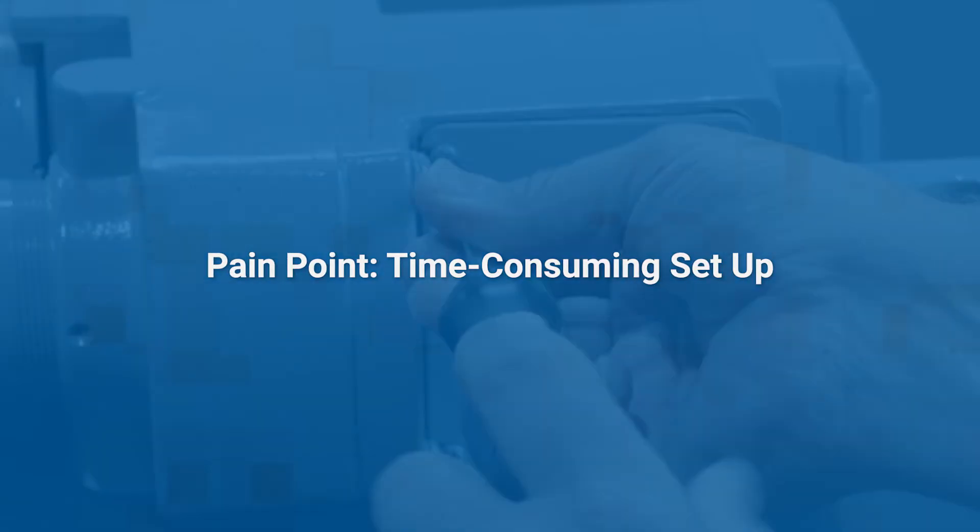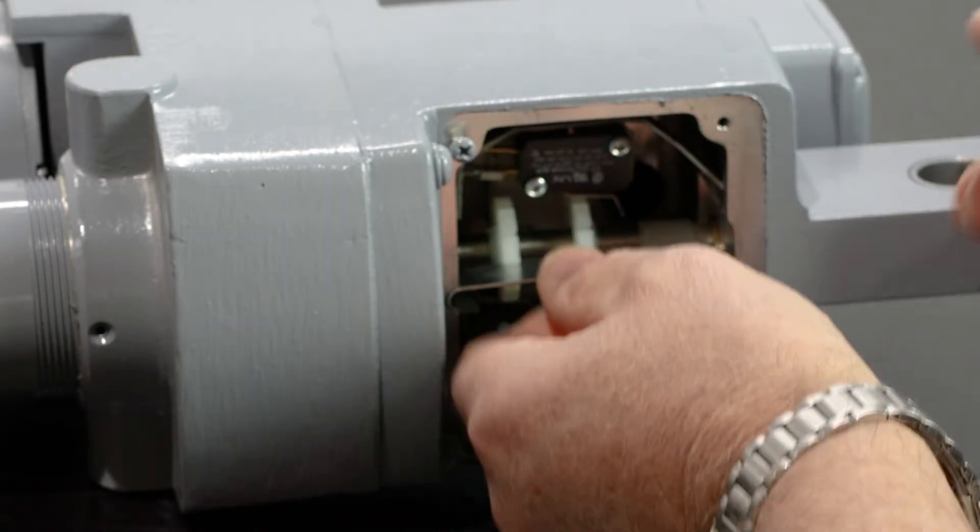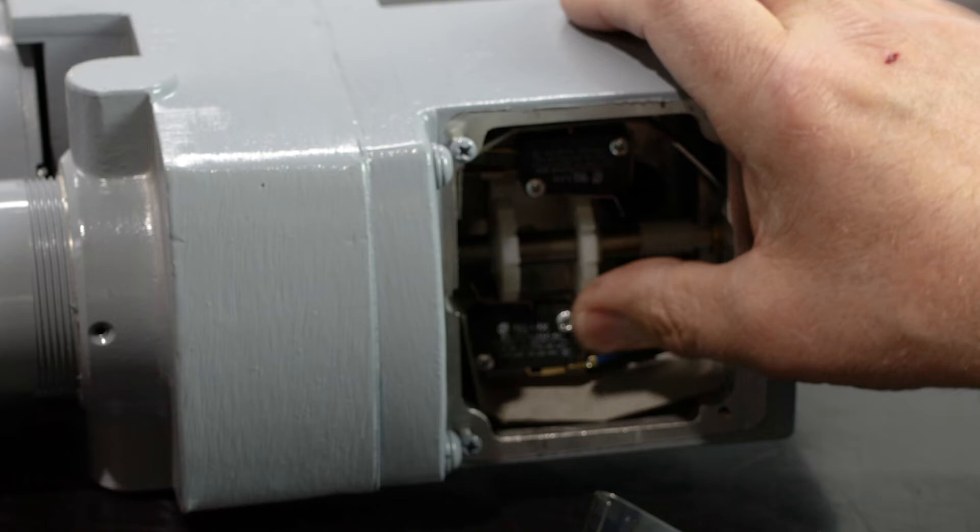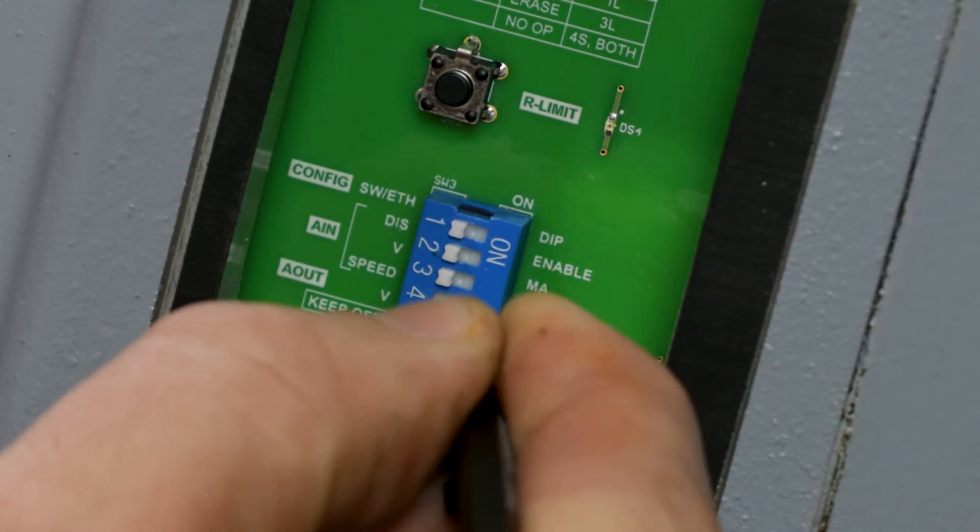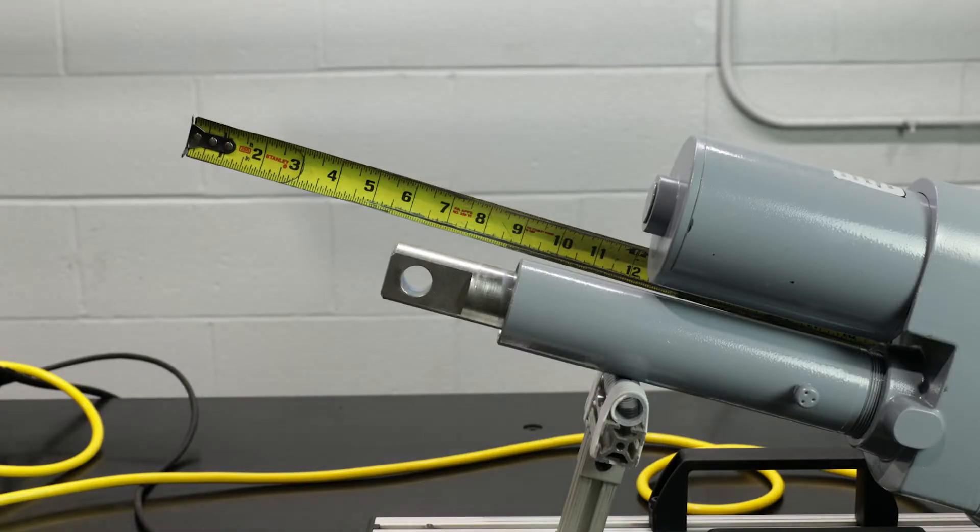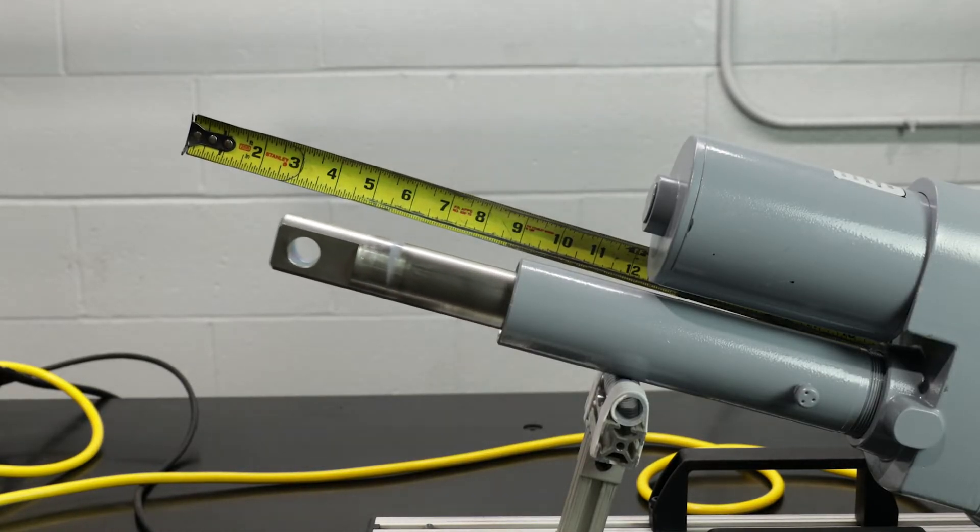Sometimes it can be time-consuming and complicated to set mechanical limits on an actuator because they wear out quickly and require additional hardware. Our smart actuator uses electronic programmable limit switches that define specific stopping points. They provide greater precision and an increased ability to repeat motions as compared to mechanical limit switches.